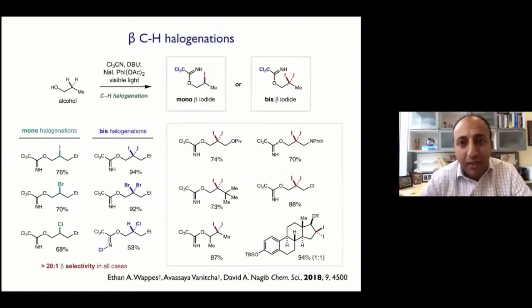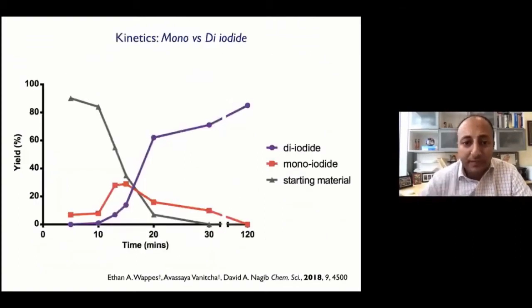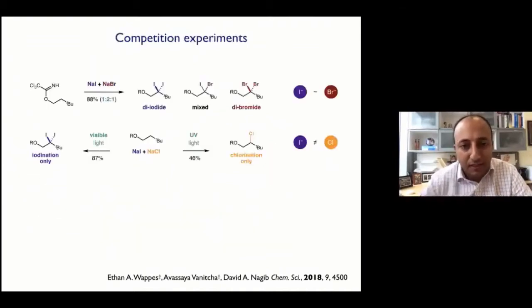And so with that in mind, we decided to pursue both the mono and the dihalogenation, really focusing on that geminal beta dihalogenation. On the bottom here, I show all the various halogens, iodine, bromine, and chlorine that work, as well as a fuller scope of the iodine. Here's just a brief look at the kinetics, where we observe the mono iodide transient intermediate in red here, after just a couple of minutes, and eventually it converts very quickly. Our rate studies have shown that actually the second C-H functionalization, it goes twice as fast.